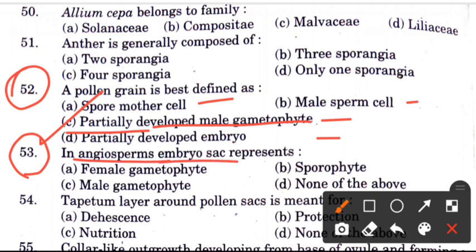Question 53: The embryo sac is best described as — options are female gametophyte, sporophyte, male gametophyte, or none of the above. The answer is A, female gametophyte.